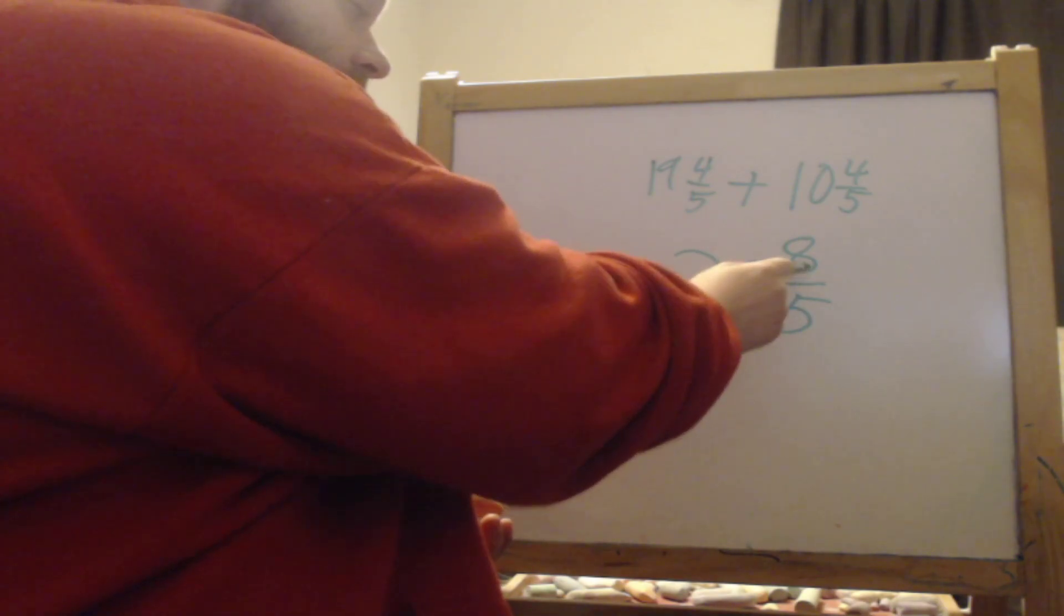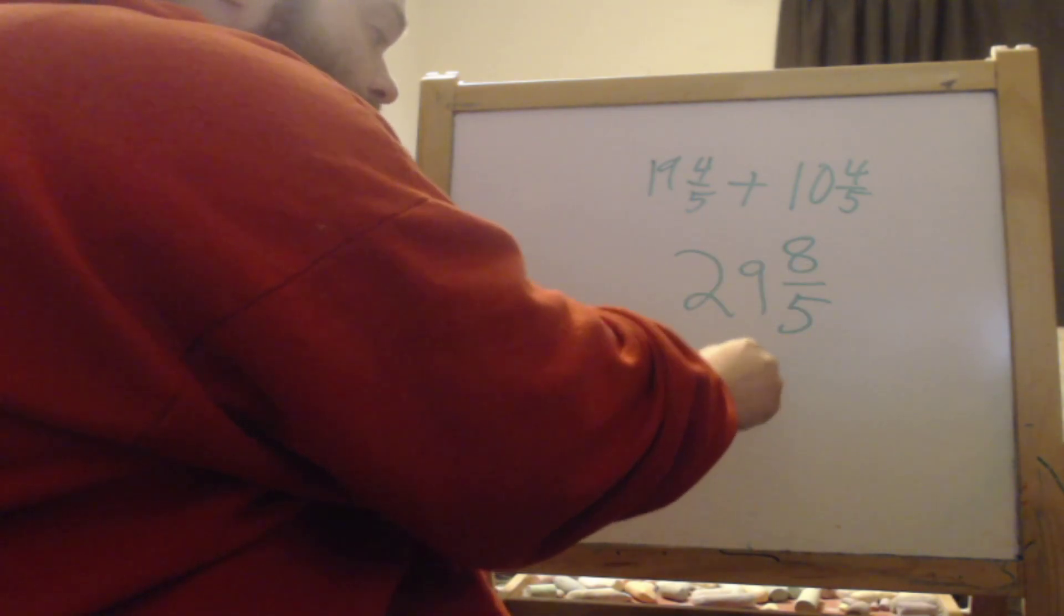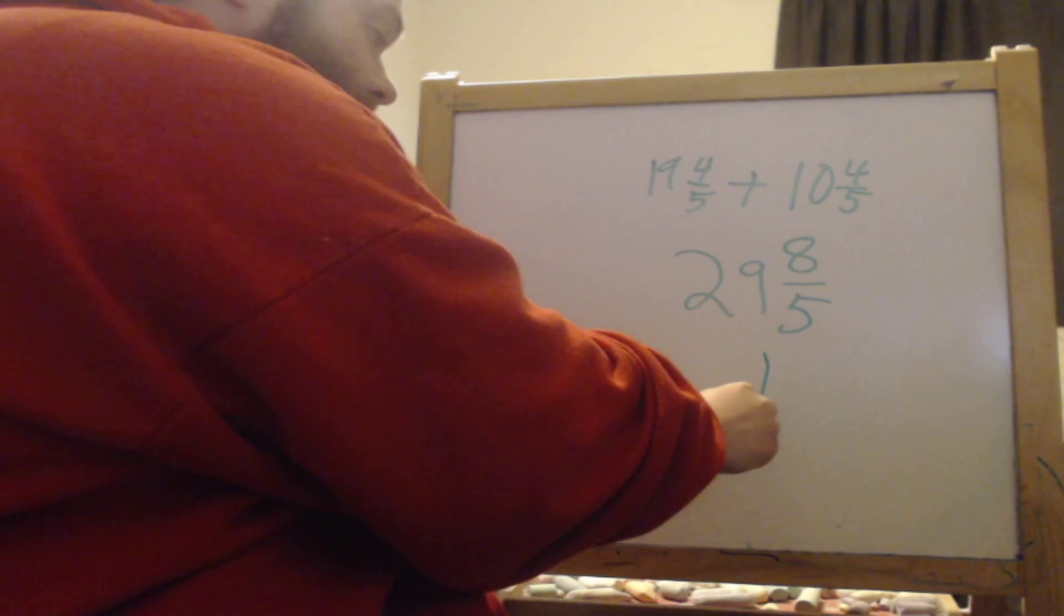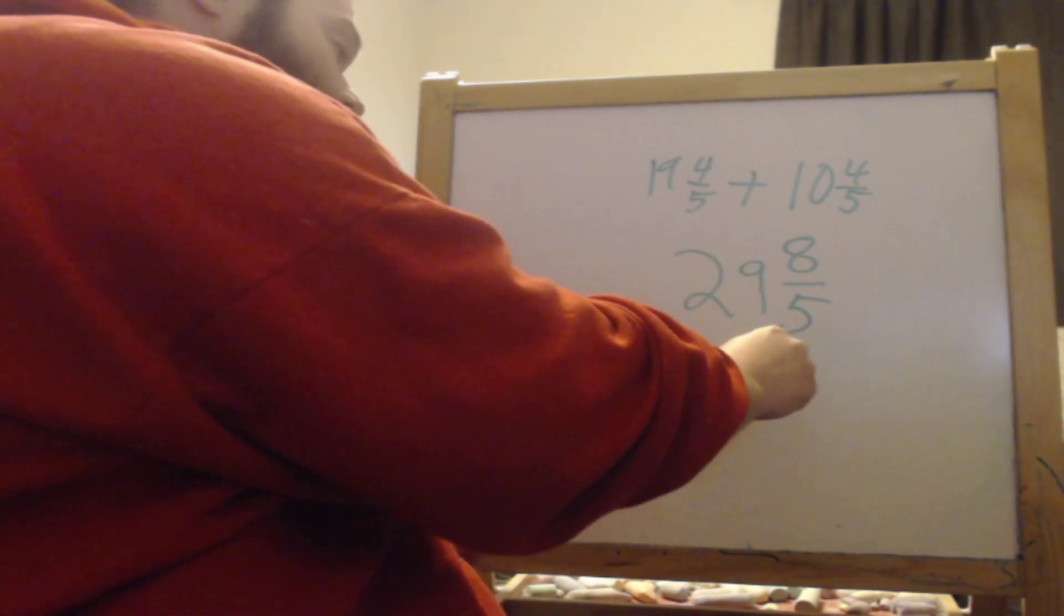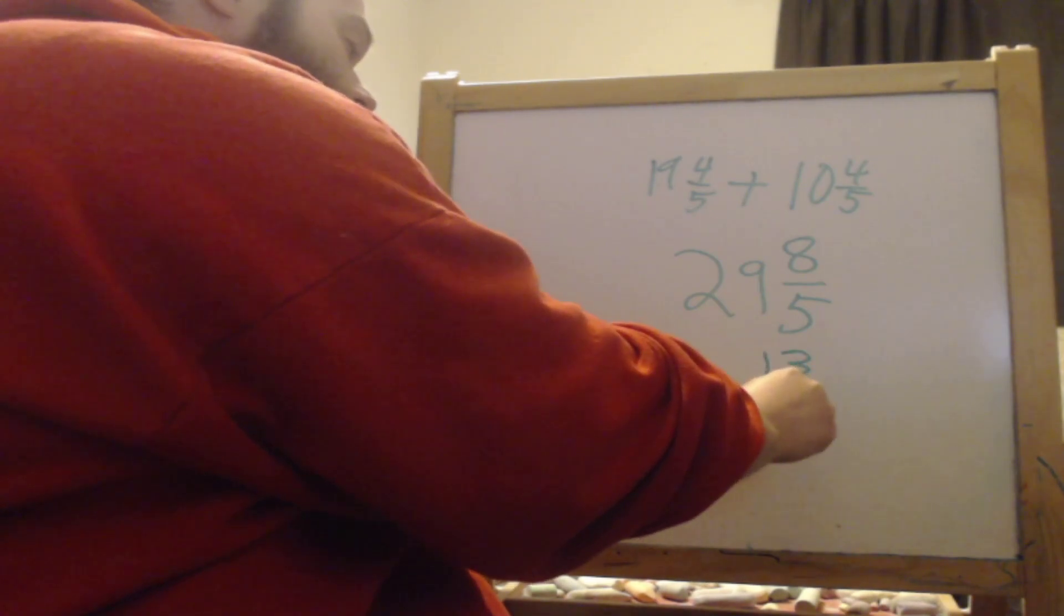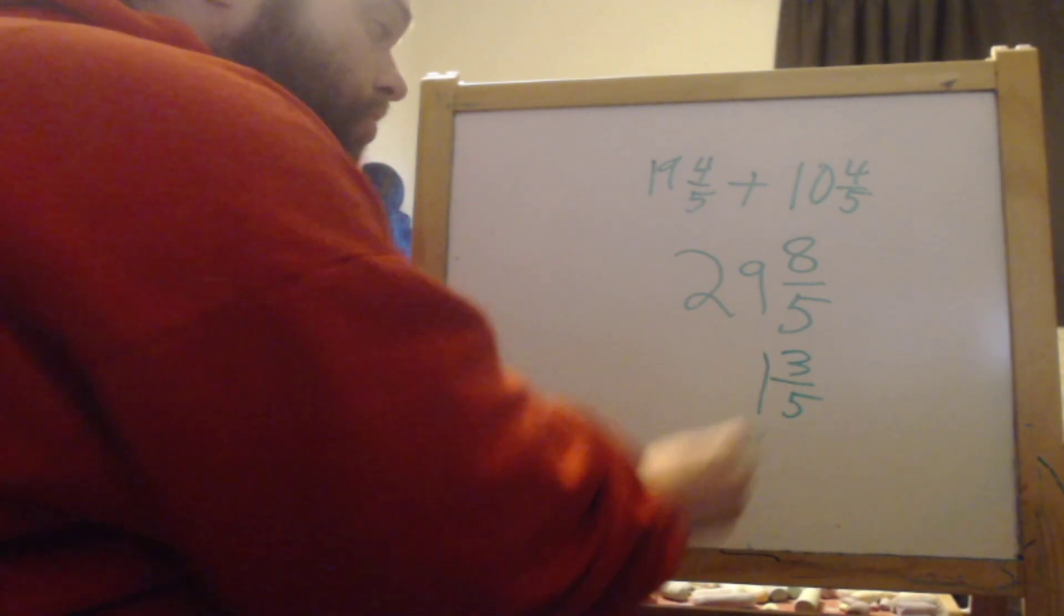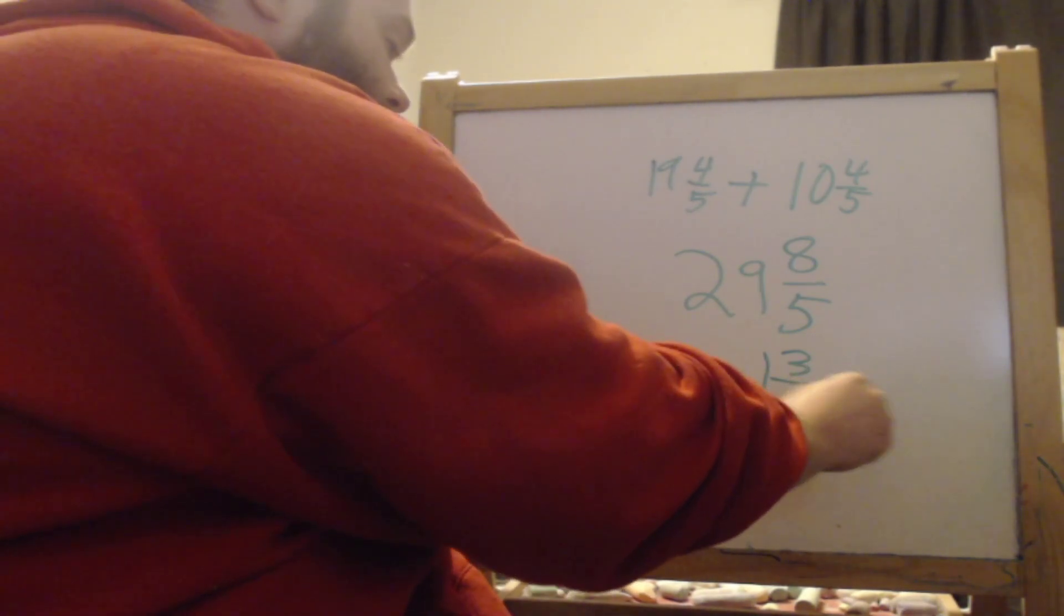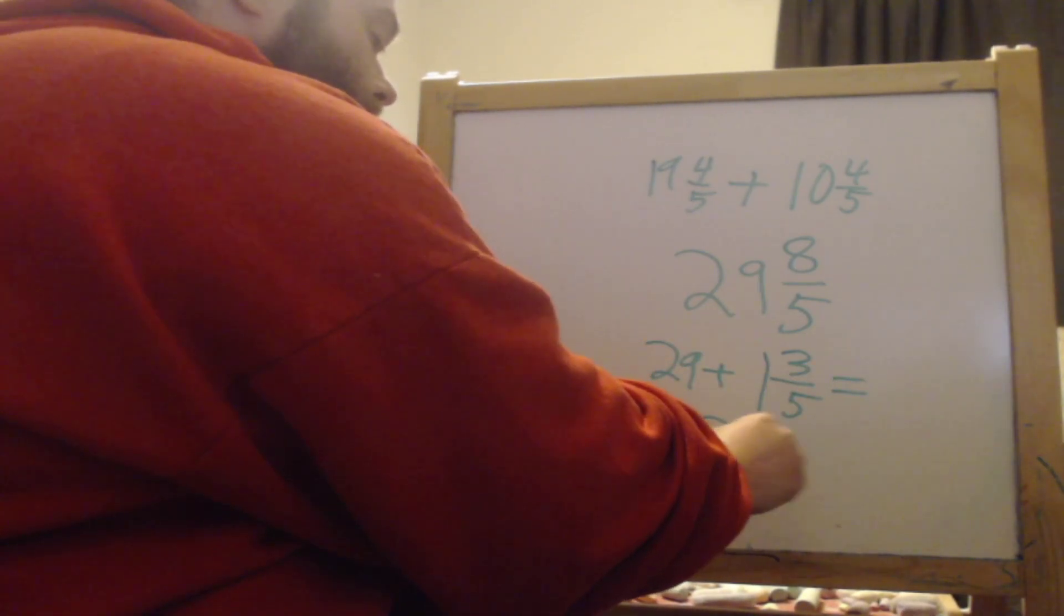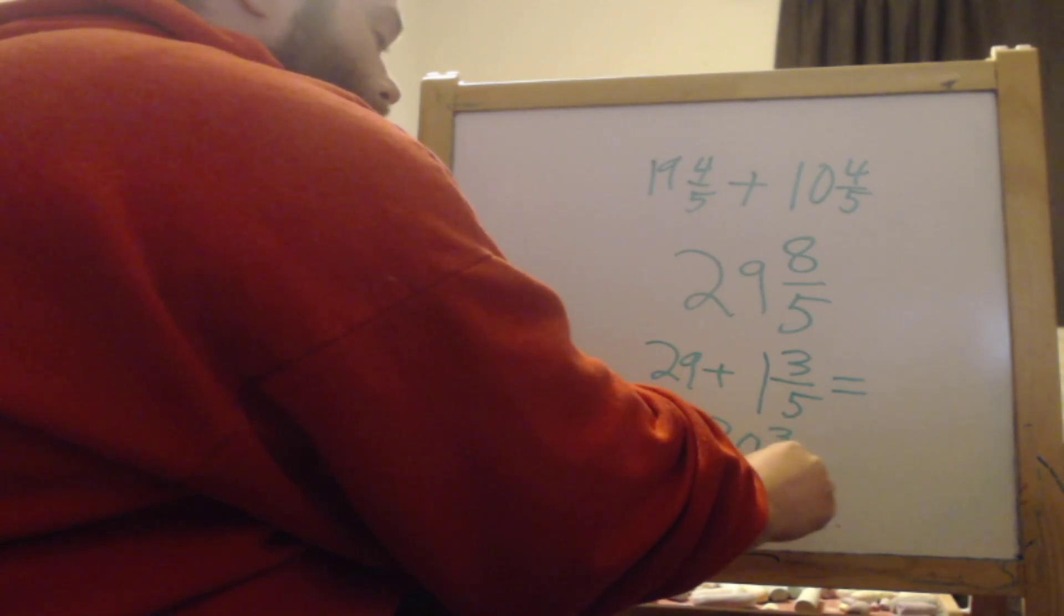I know that 5 goes into 8 one time. So there's one group of 5 in 8, and then there's leftover. How many are left over? It is 3. So it becomes 1 and 3/5, and then plus 29, which would then equal 30 and 3/5.